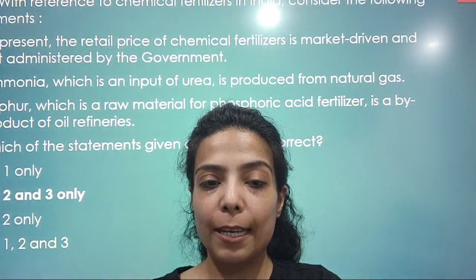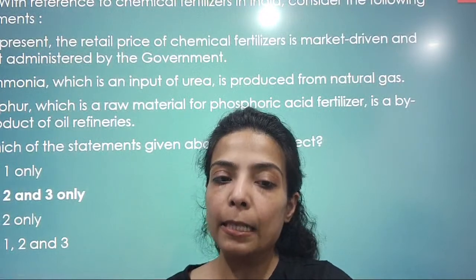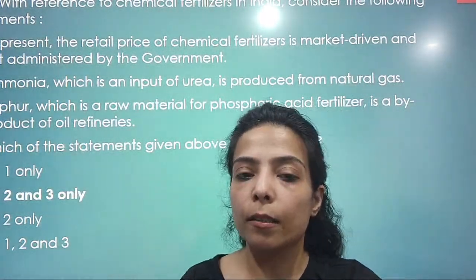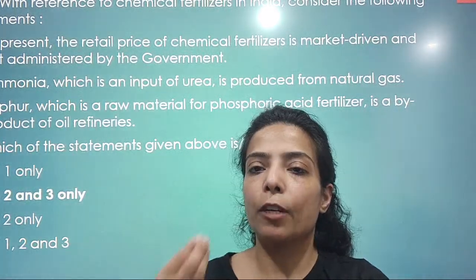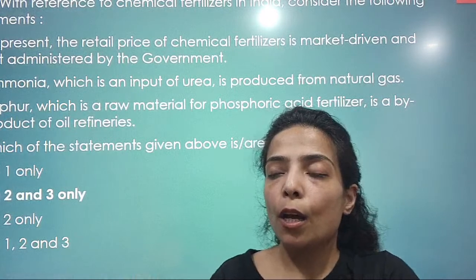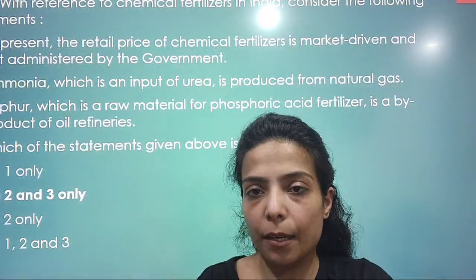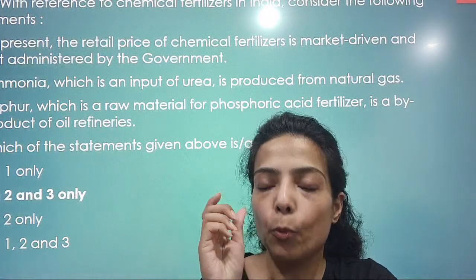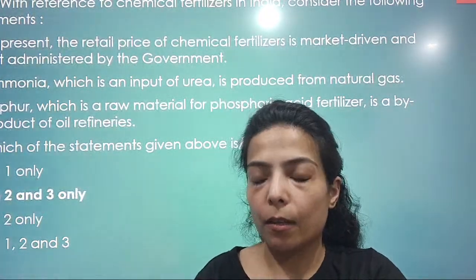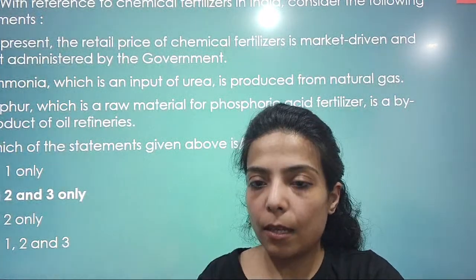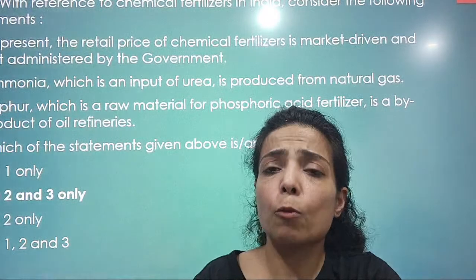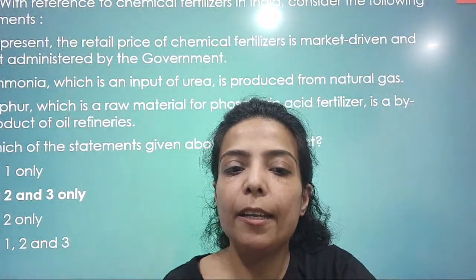With reference to chemical fertilizers in India: at present, the retail price of chemical fertilizers is market-driven and not administered by the government — this is the first statement to evaluate. Regarding Urea, the cost is controlled by the government, so the first statement is false. Second: ammonia, which is an input of Urea, is produced from natural gas. Third: sulfur, which is a raw material for phosphoric acid fertilizer, is a by-product of oil refining. If you have studied the nutrient-based subsidy topic, you can easily find the answer.